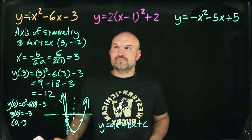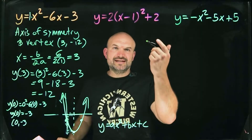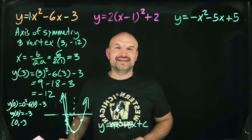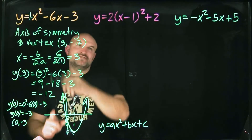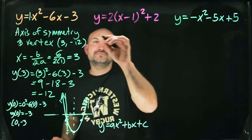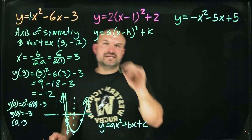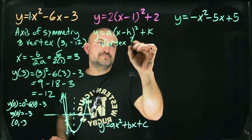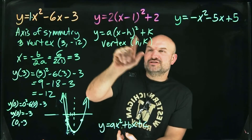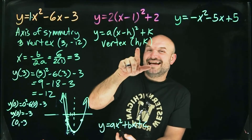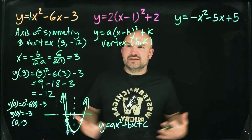Now let's look at vertex form. Vertex form is the easiest, fastest way to graph a quadratic. Rather than doing all that work to identify the vertex, vertex form gives us everything directly. The vertex is simply h comma k. Notice the formula has x minus h, so take the opposite of the value shown — here we have negative one inside, so h equals positive one.